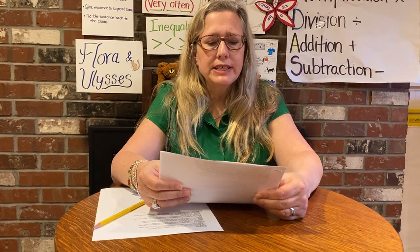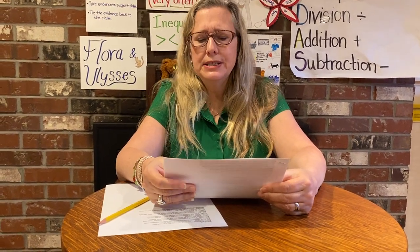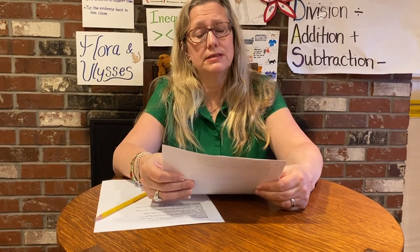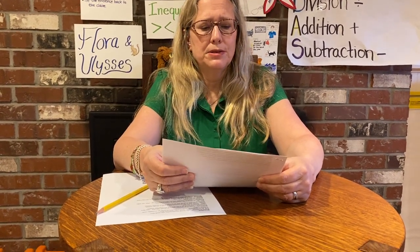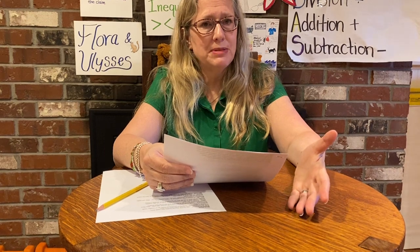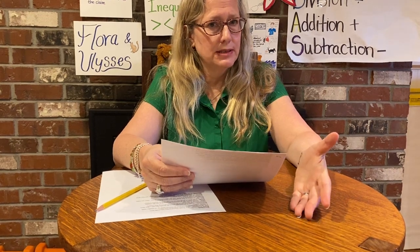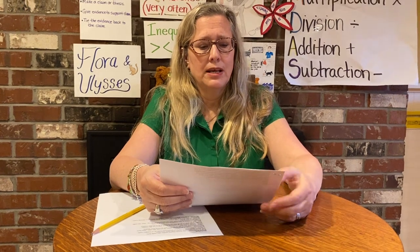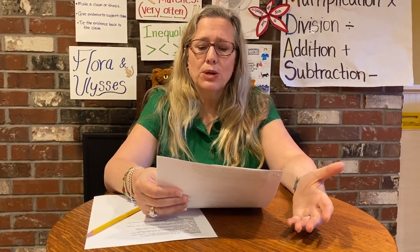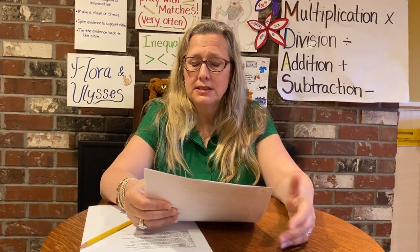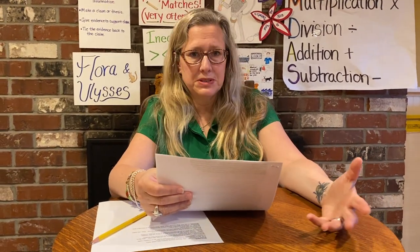Number two: colonists felt that the English had no idea what their lives were like in the colonies — it was very different from England. They felt like you're making laws about how we're supposed to live and you don't have any idea what our lives are like. The colonists were living 3,000 miles away from England. How could England control them from that far away, especially in those times? It's not like they could get on a jet and be over here in a few hours.